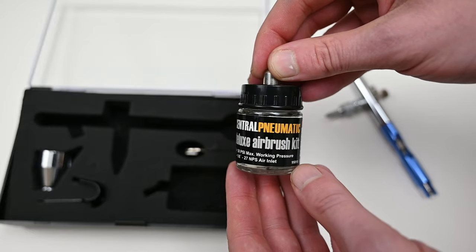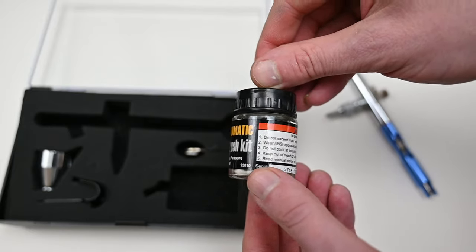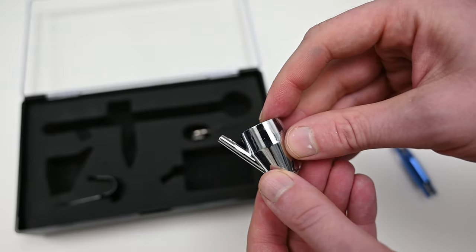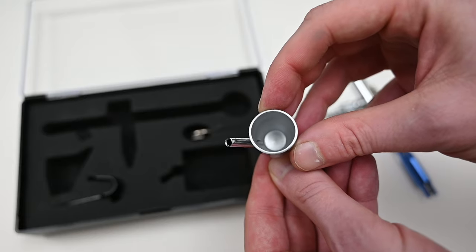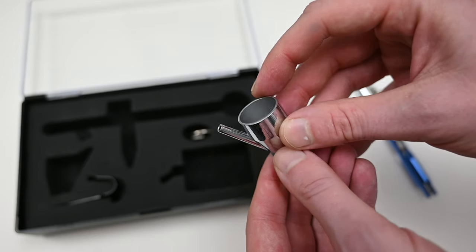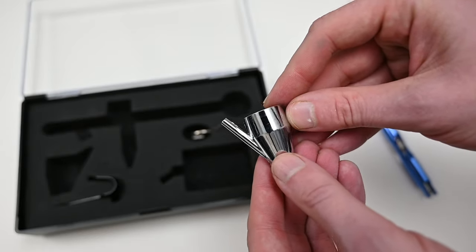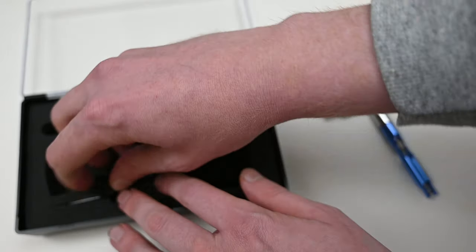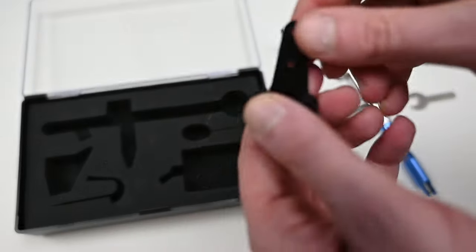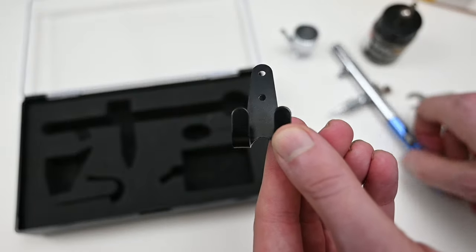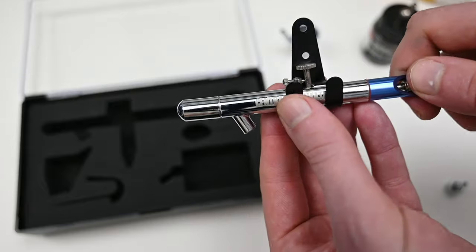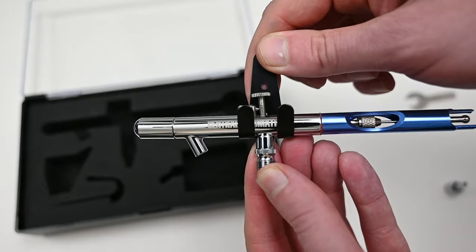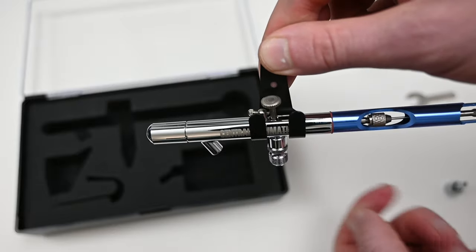Besides the airbrush, inside the box you get a glass jar which is siphon-fed, about three-quarters of an ounce, and you also get one of these small cups which is actually pretty high quality. This siphon cup holds about five milliliters of paint, but it has one major flaw that we'll talk about later. You also get one of these small stamped metal wrenches to remove the nozzle. Something unique with this airbrush is that you get this small clip which you can mount to your desk or to a wall with a few screws, and then this is used to hold your airbrush. I think this is great. It's a really cool way to store your airbrush while you're not using it.